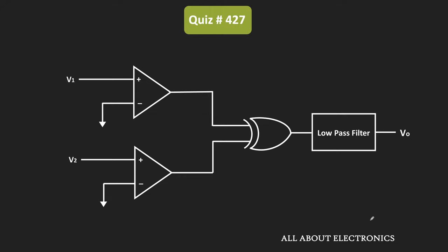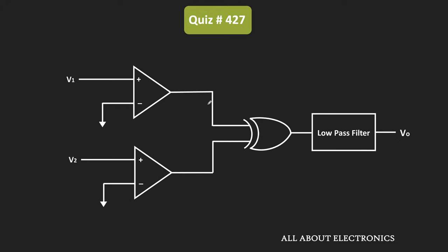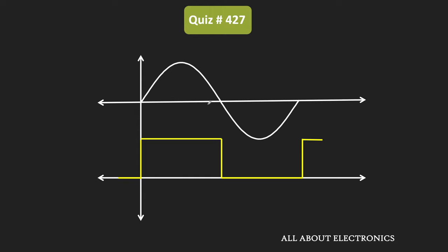We have been asked to find the average value of the output waveform. Both V1 and V2 are sinusoidal signals of the same amplitude and frequency, but they are phase shifted. Whenever these signals are applied to the comparator, based on their amplitude, the comparator will give a specific output. The inverting terminals of both comparators are connected to ground, meaning whenever the input signal is positive, the output will be high, and whenever the signal is negative, the output will be zero.